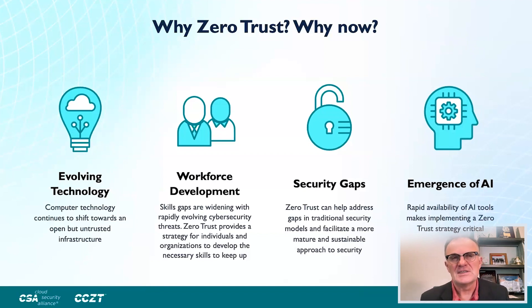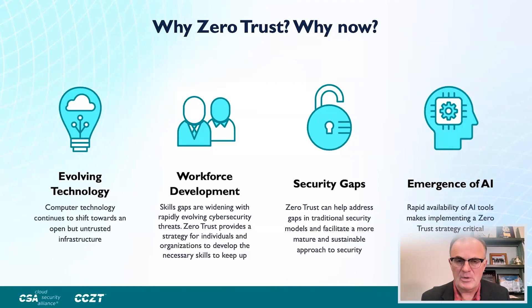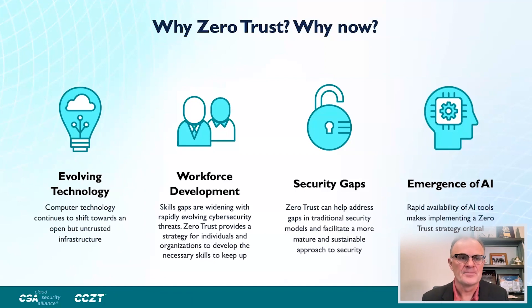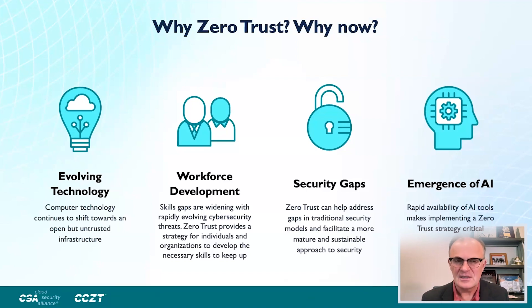When you consider Internet of Things (IoT) and OT systems, Zero Trust is going to be the primary way you secure those systems. We certainly hope to secure the internals and software development in these devices, but we don't always have access to that, and it's not easy to do. The point is that we're going to see so many dynamic changes in technology, but the principles around Zero Trust are going to remain. If you understand it as a philosophy informing strategy, you'll find you can apply it to whatever changes the world brings.